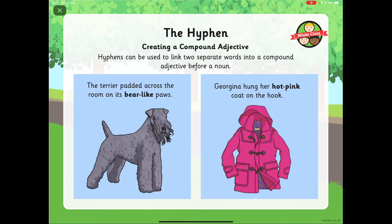Sometimes a hyphen can be used to create what we call a compound adjective. They can be used to link two separate words into a compound adjective before a noun — in other words, a describing word that goes before a noun, a person, place or thing. So we've got: the terrier padded across the room on its bear-like paws. You see bear-like has a hyphen in, saying that the paws look very bear-like. The paws being the noun.